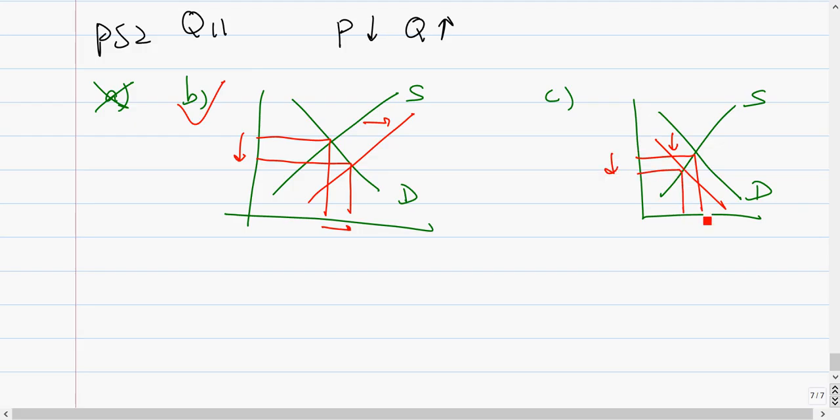The question is asking which one of the following will decrease price and increase quantity at the same time. So we need to go through all the choices. A says a decrease in price of X. It doesn't say whether it's around the supply or demand, so we have no idea whether this is right or not.